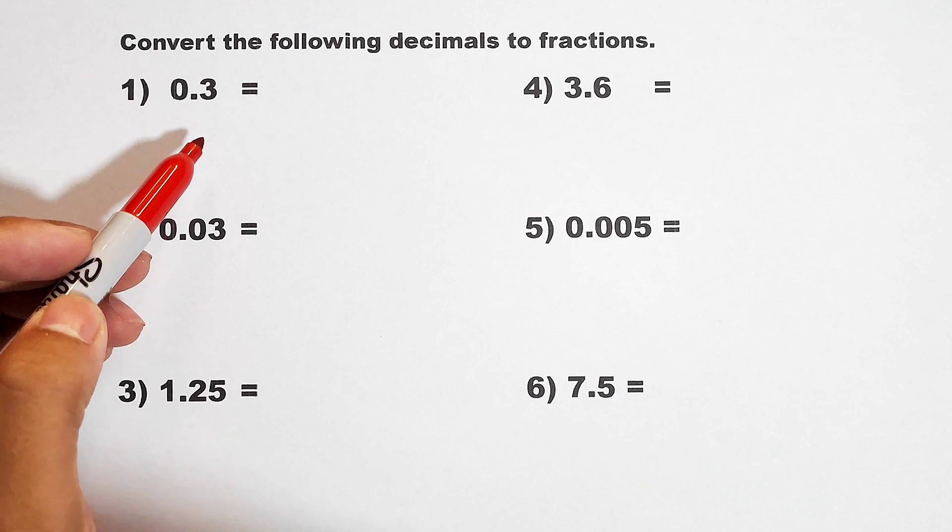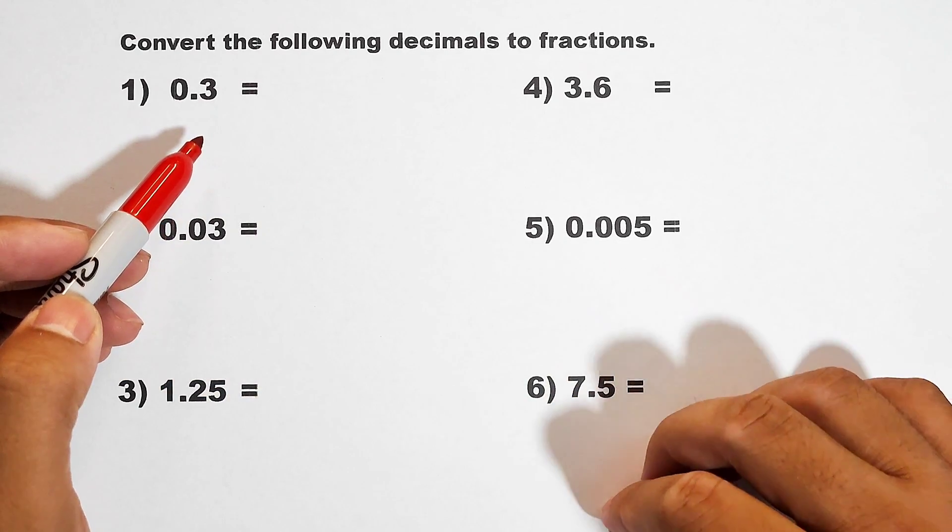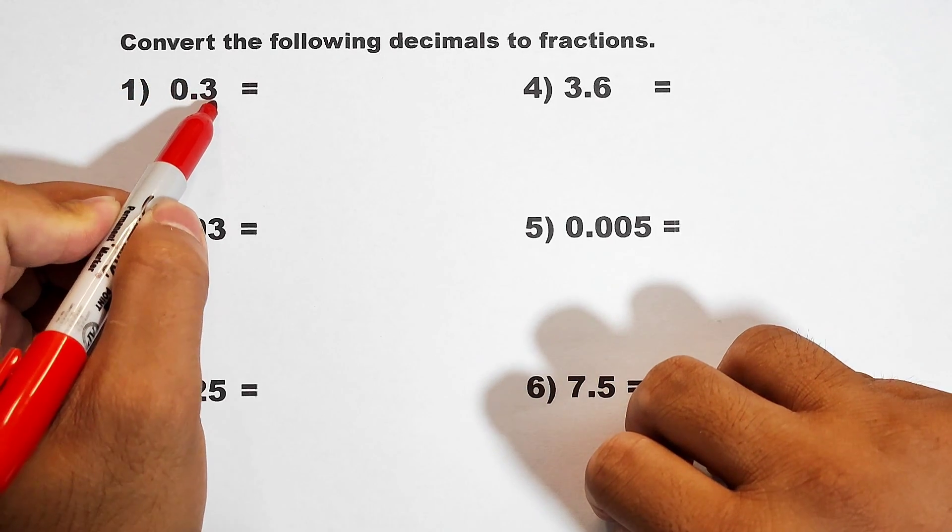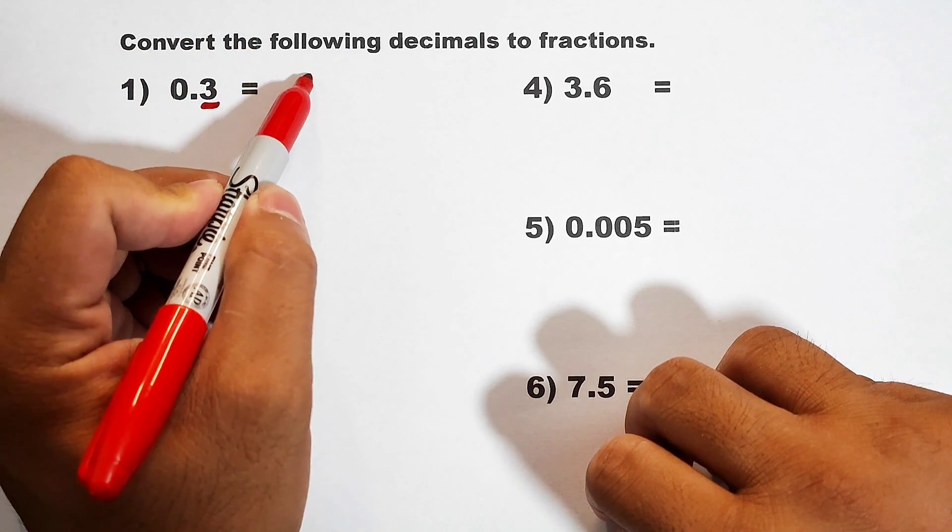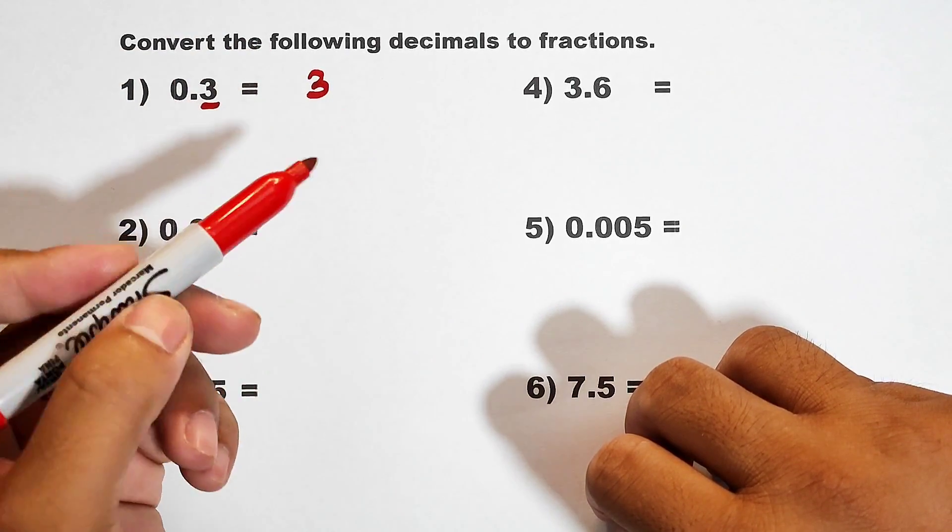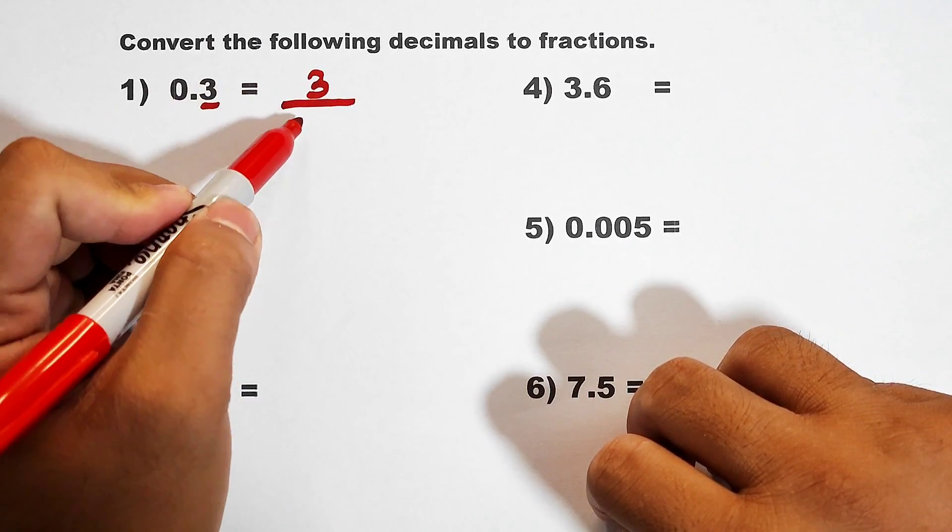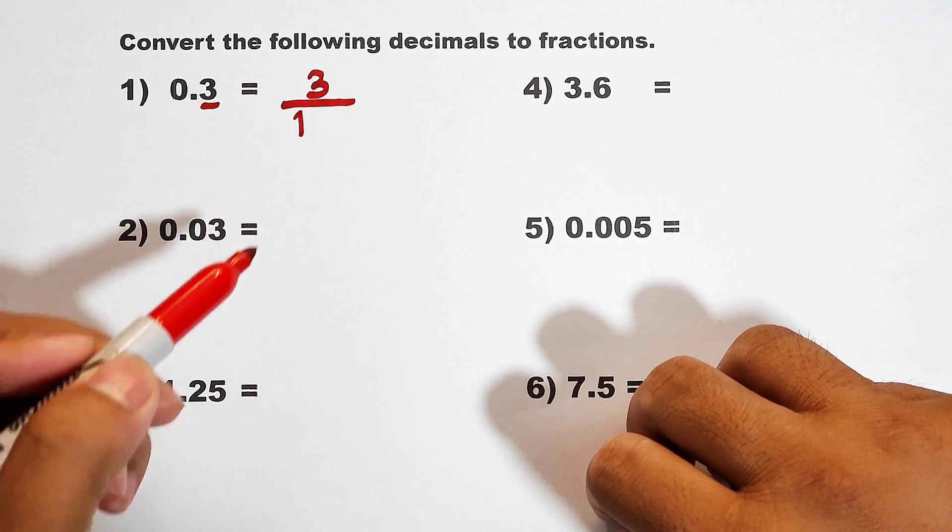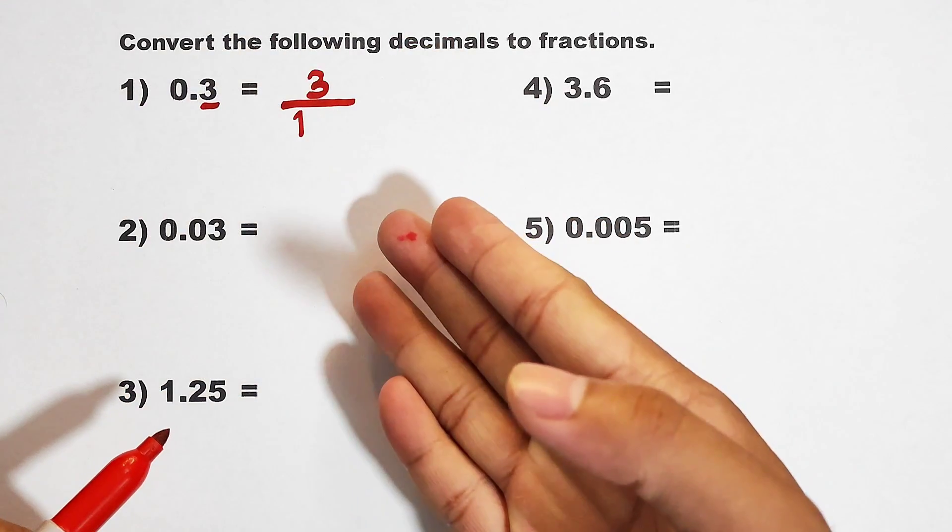I will give you the easiest or the fastest way on how to convert this. First, get this number. It will serve as your numerator. So you have 3. And for your denominator, since this one is a fraction, always put 1 in your denominator. Then after this, you will add zeros here.